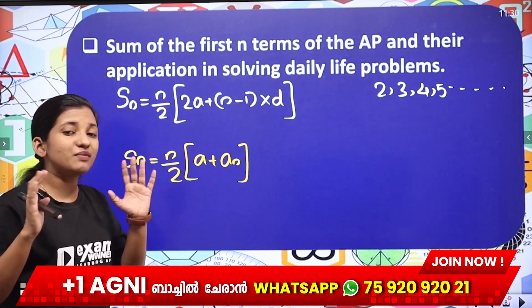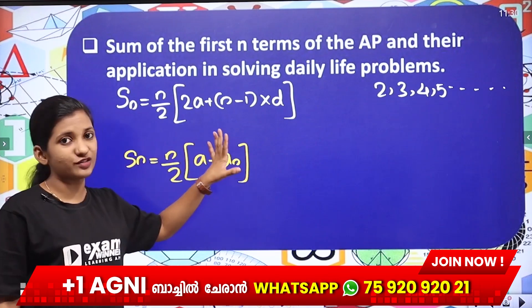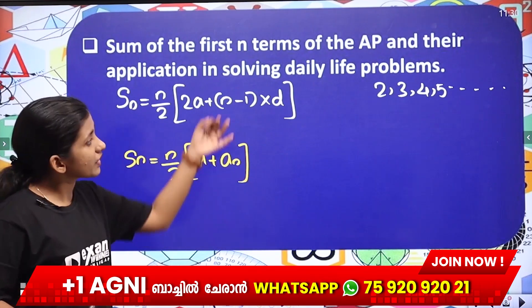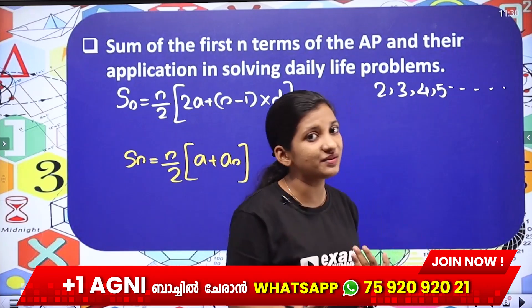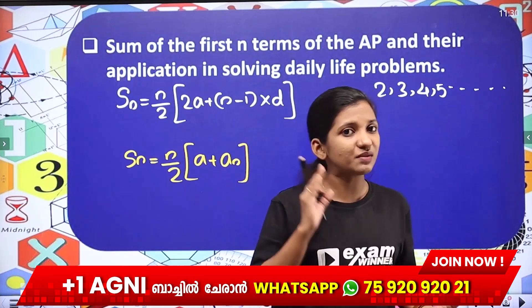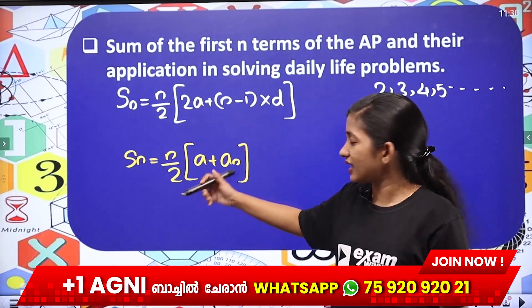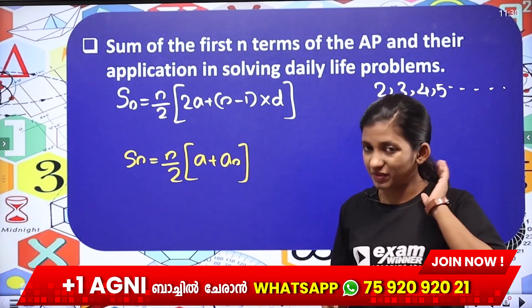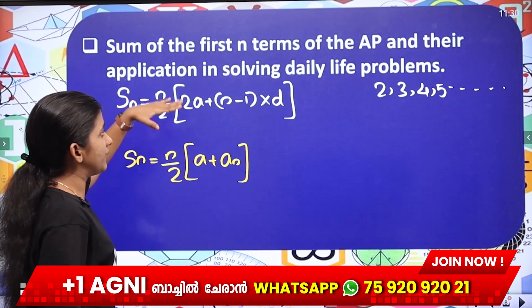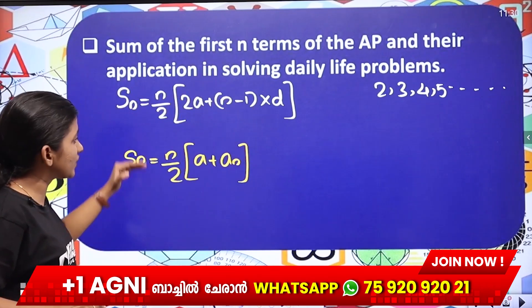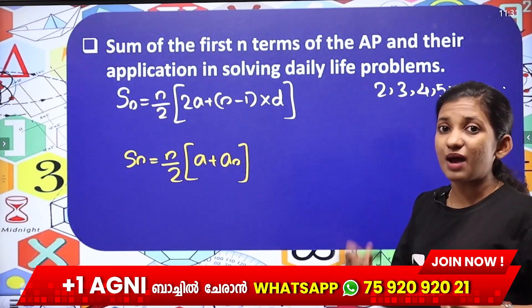A plus an — where 'a' is the first term and 'an' is the last term — will be used. Then Sn equal to n by 2 into a plus an. Also Sn equal to n by 2 into 2a plus n minus 1 into d. Then we use these important questions.